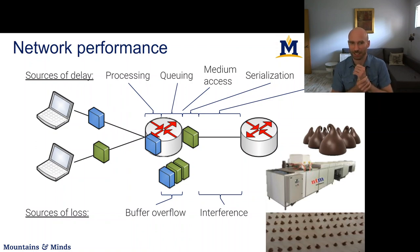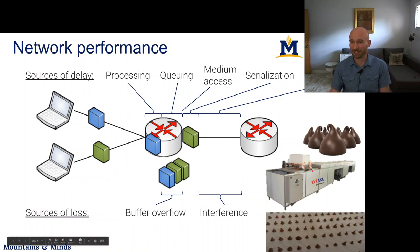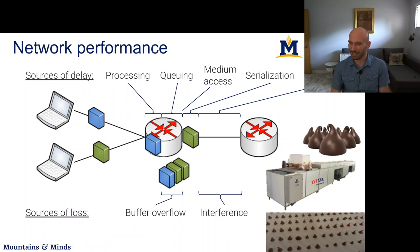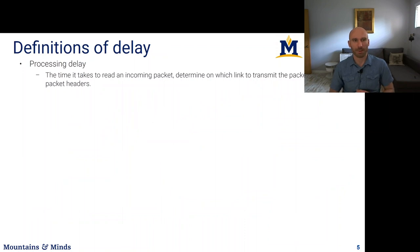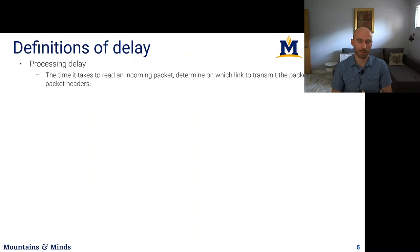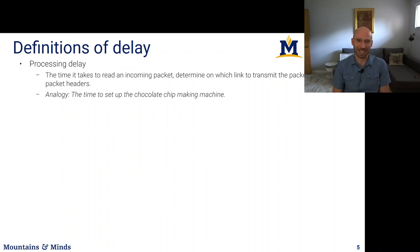Let's look at an analogy: think of a network as a machine that produces chocolate chip cookies being dropped onto a conveyor belt that moves forward and delivers them. Processing delay in network terms is the time to read an incoming packet, determine which link to send it on, and form packet headers. In the cookie analogy this is the time to set up the chocolate chip making machine to do some work.